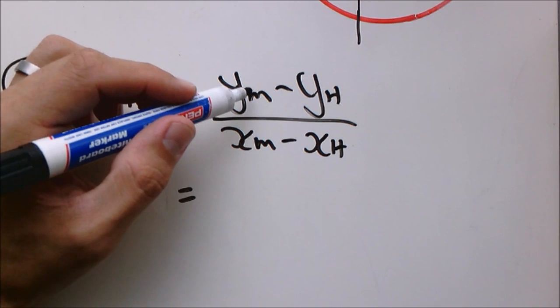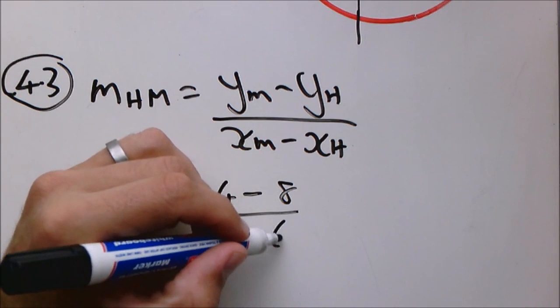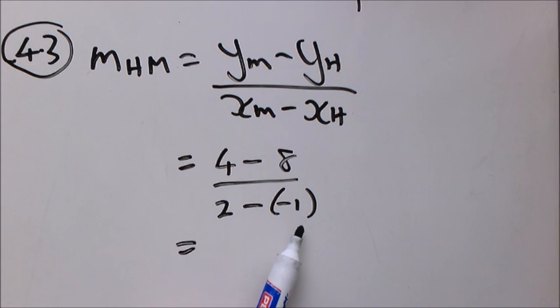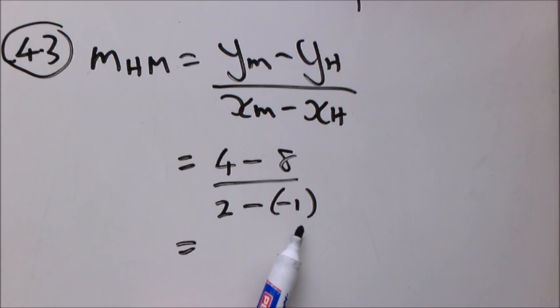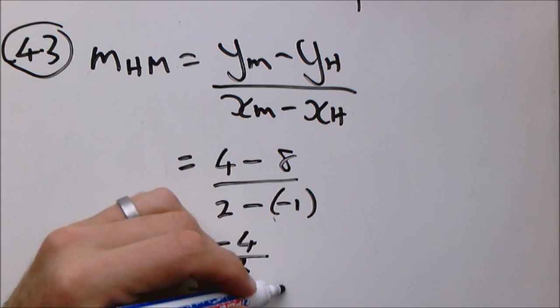So I am going to use HM. So gradient HM equals (yM - yH)/(xM - xH). Now it doesn't really matter if we use HG or MG or HM. You will get the same answer as long as you do your calculations correctly. So the gradient will then be calculated as follows. This is 4 - 8 and 2 - (-1). I always advocate to substitute by using brackets, especially with a negative, so that you can trace if you made any mistakes. 4 - 8 = -4, 2 + 1 = 3, and that is our gradient.